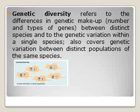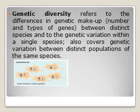In a particular species, there are individuals. In those individuals, there are going to be genetic variations. The organisms are different — there are different variations among them. This refers to differences in genetic makeup — the number and types of genes between distinct species.